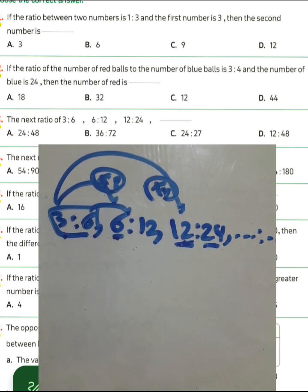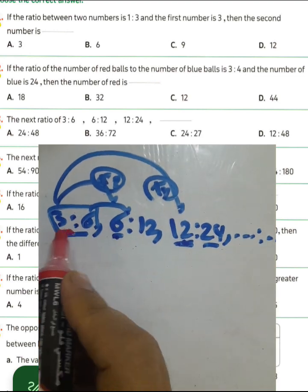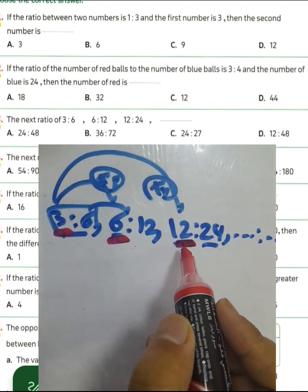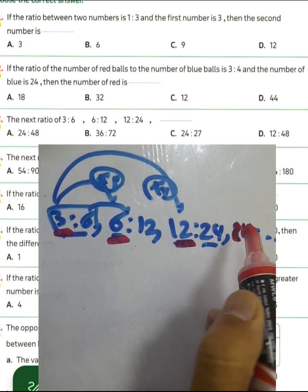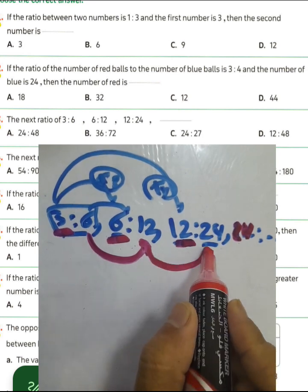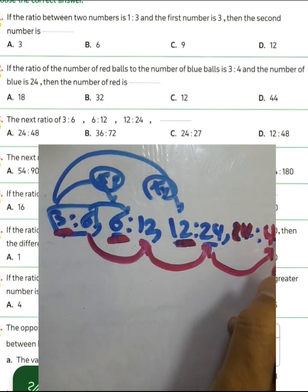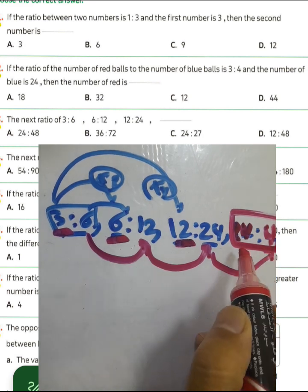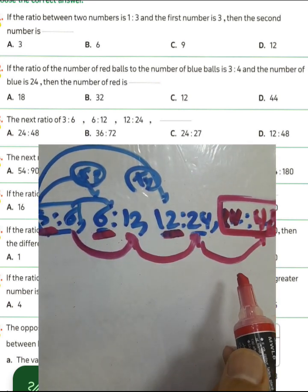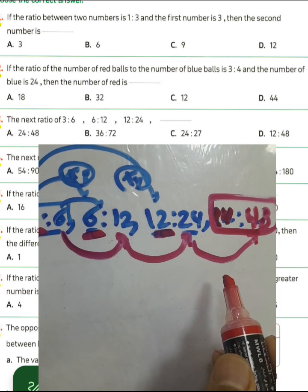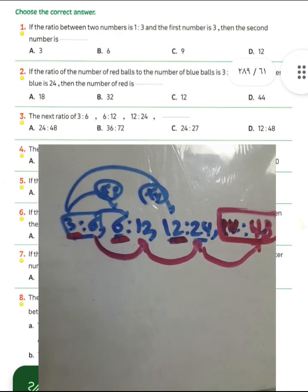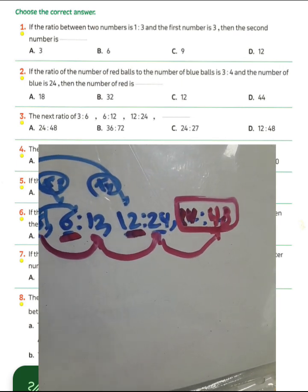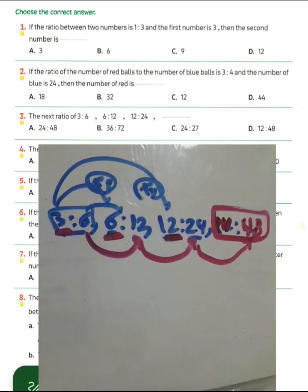Another method: three plus three equals six, six plus six equals 12, twelve plus twelve equals 24. Then: six plus six equals 12, twelve plus twelve equals 24, twenty-four plus twenty-four equals 48. So the next ratio will be 24 to 48. Choose 24 to 48 — that is ratio A for question number three. The result is 24 to 48.